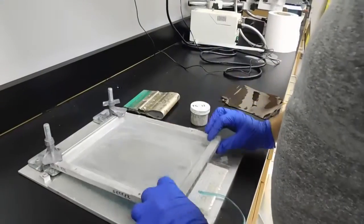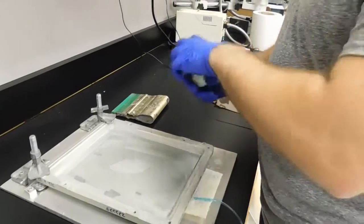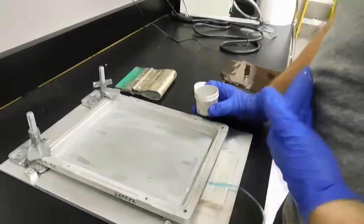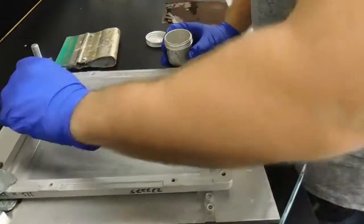So first thing you do is run a bead of ink on the side close to you. That's because the first step is going to be to flood.